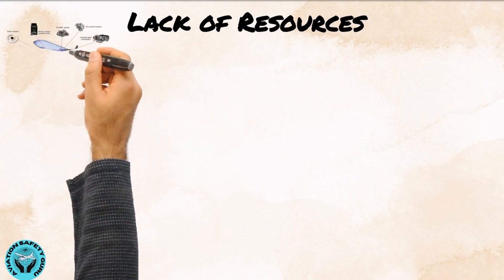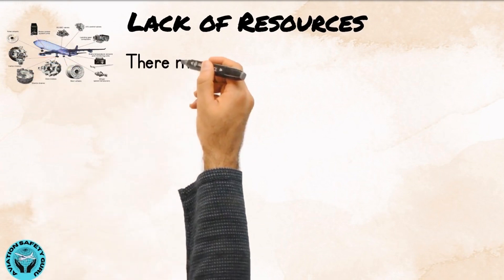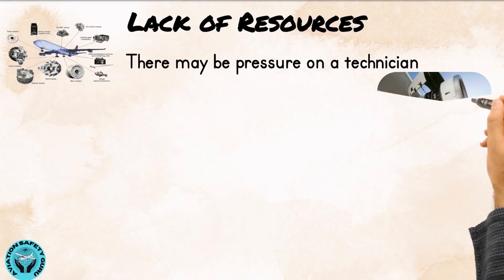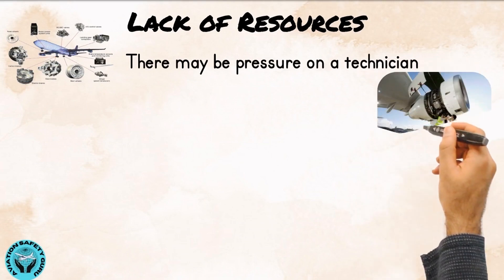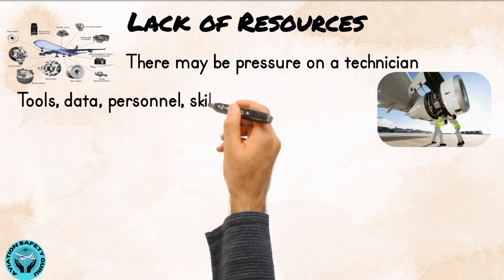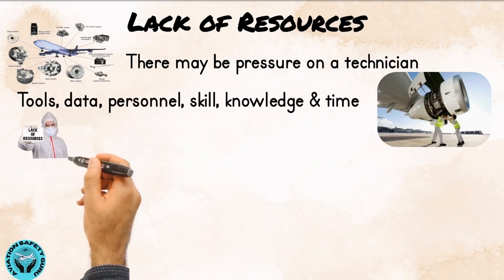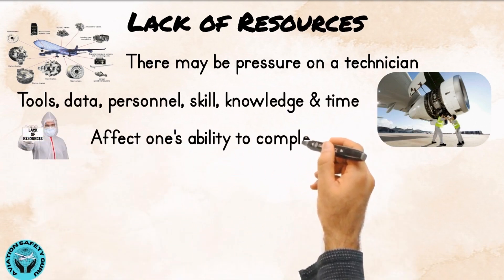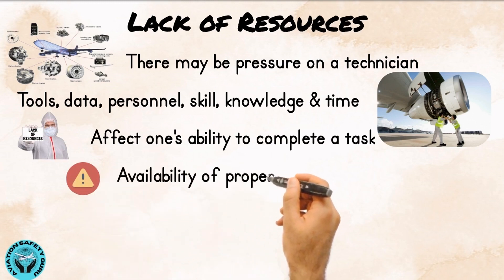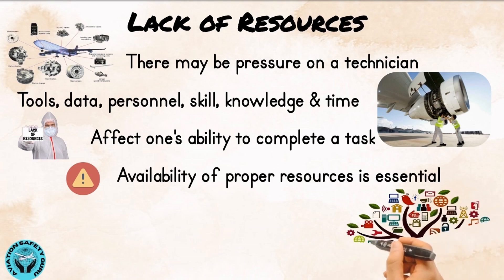Lack of resources: if all the parts are not available to complete a maintenance task, then there may be pressure on a technician to complete the task using old or inappropriate parts. Resources include tools, data, personnel, skill, knowledge, and time. Lack of any of these resources can affect one's ability to complete a task. Therefore, availability of proper resources is essential for completing tasks successfully.